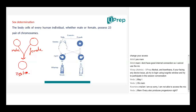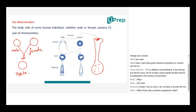A similar process happens in hibiscus — in the androecium and gynoecium. The pollen grain sits on the stigma, develops a pollen tube, and this tube reaches the ovule inside the ovary. Inside the ovule is the egg, and the pollen fuses with the egg — that is fertilization.